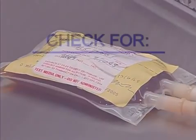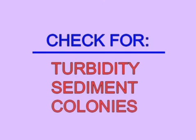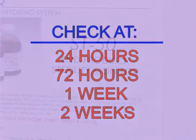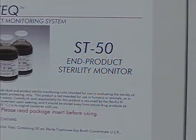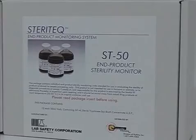Following the assay, the test subject is checked for turbidity, sediment, or discrete colonies which indicate microbial growth at 24 hours, 72 hours, one week, and two weeks, and the appropriate entry is made to the Steritech sterility report contained in the Steritech package insert.